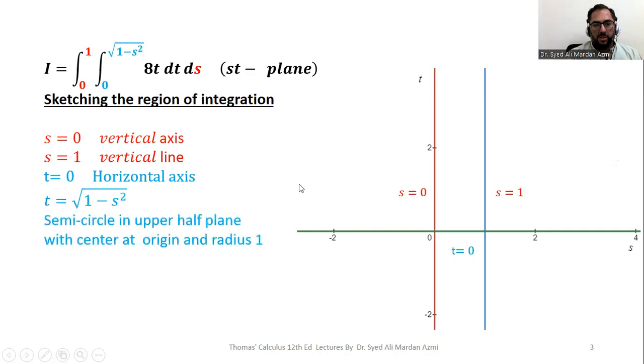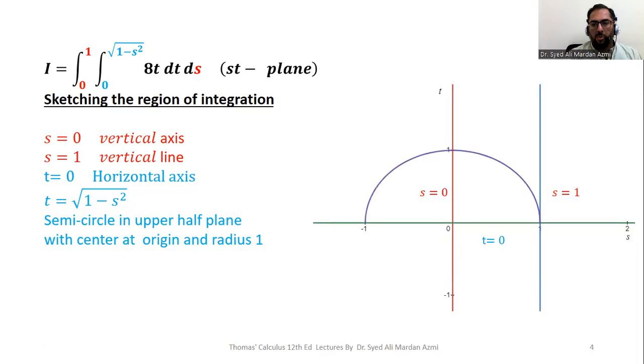In the next step, we will discuss the fourth boundary t is equal to square root of 1 minus s square. Now this is a semicircle in the upper half plane with center at origin and radius 1. So we will plot it.